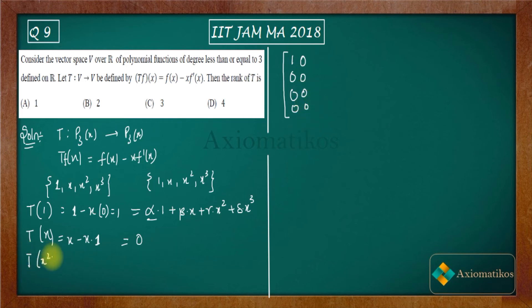Now see image of x². It will be x² - x·2x, so it will be x² - 2x². So what you will get, just compare the coefficients: α will be 0, β will be 0, γ will be -1. So I should write 0, 0, -1, 0. Find out x³, so it will be x³ - x·3x², so you will get -2x³. So the image will be 0, 0, 0, -2.